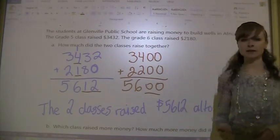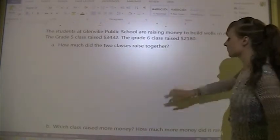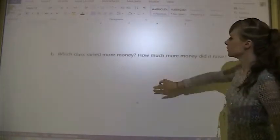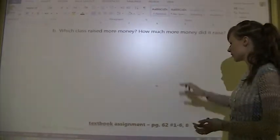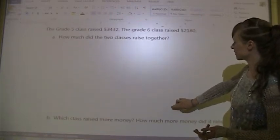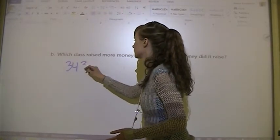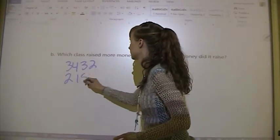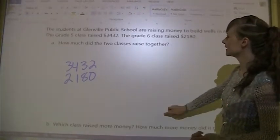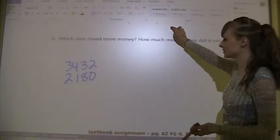Let's do the subtracting one next. Which class raised more money? How much more money? 3,432, 2,180. Let's make sure that's right. There's my strategy.